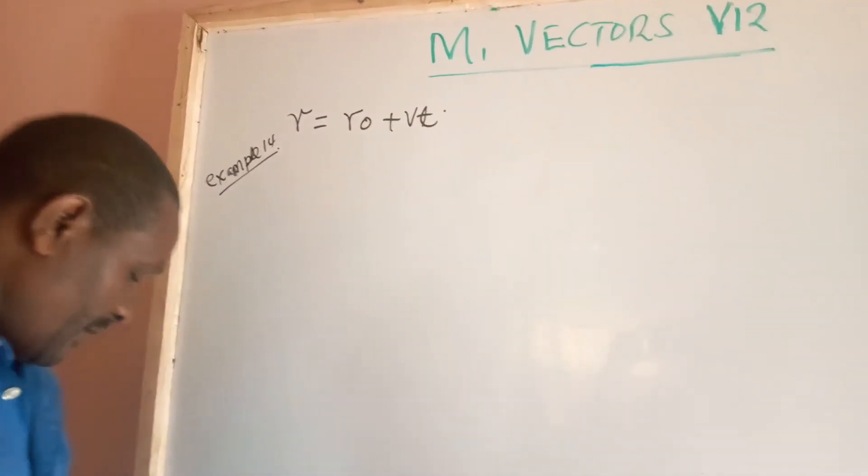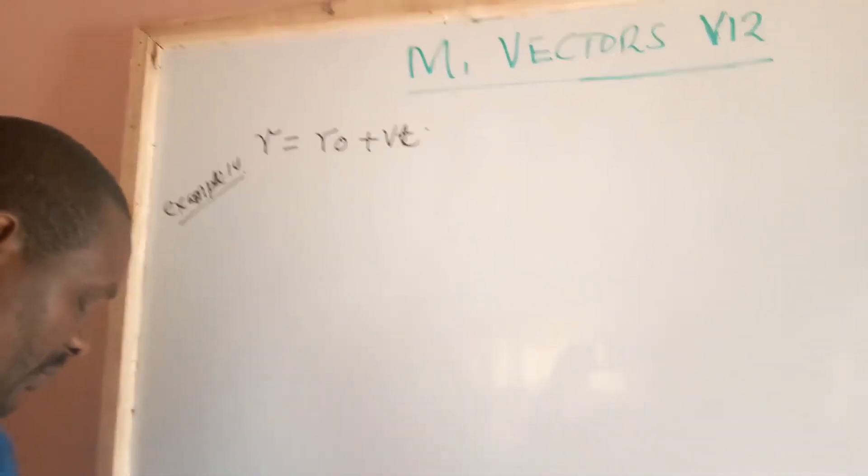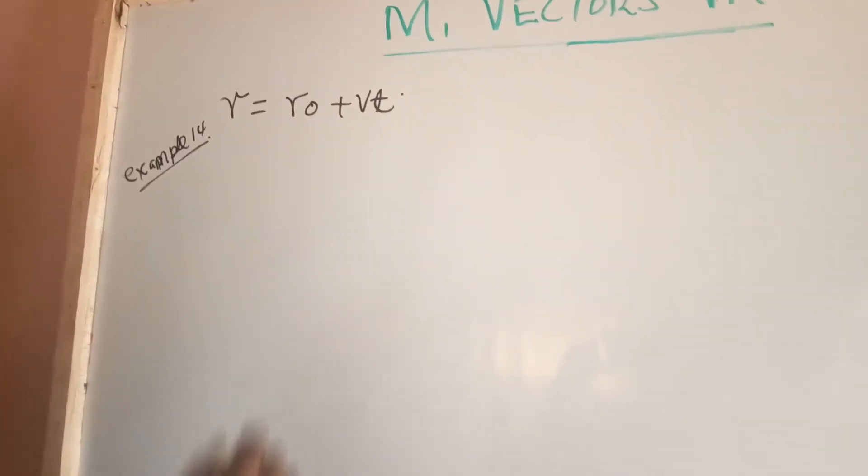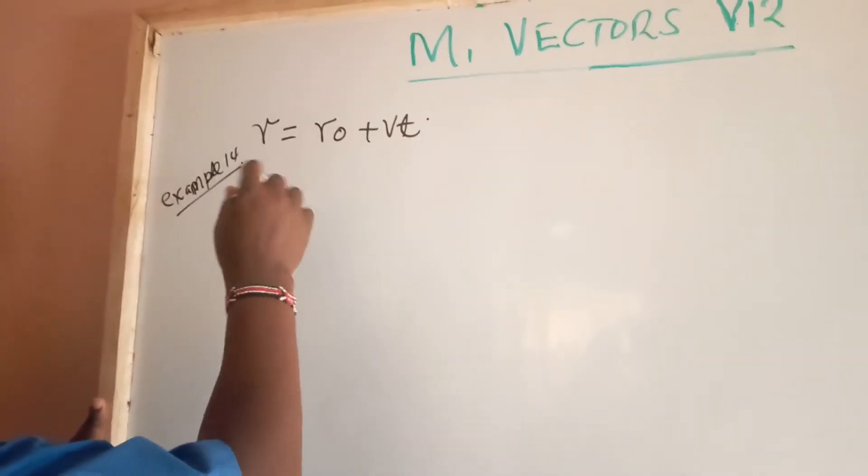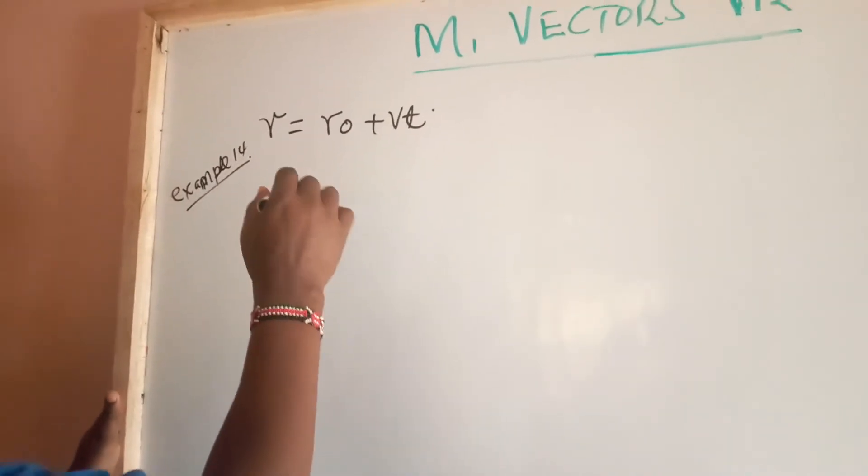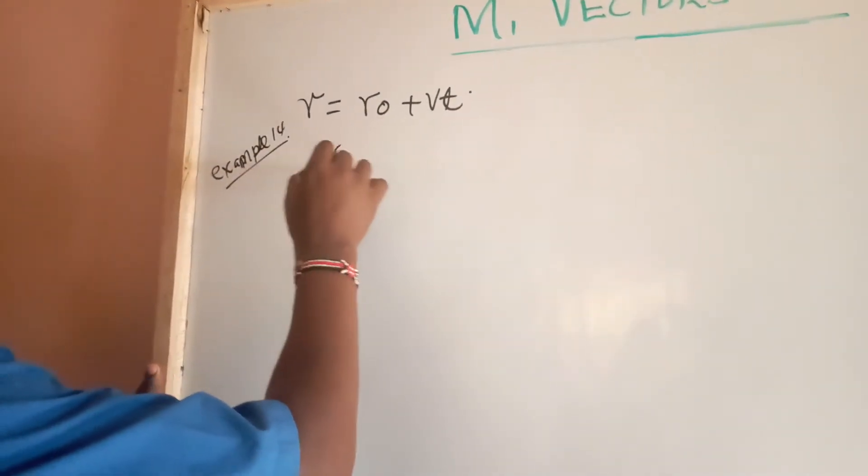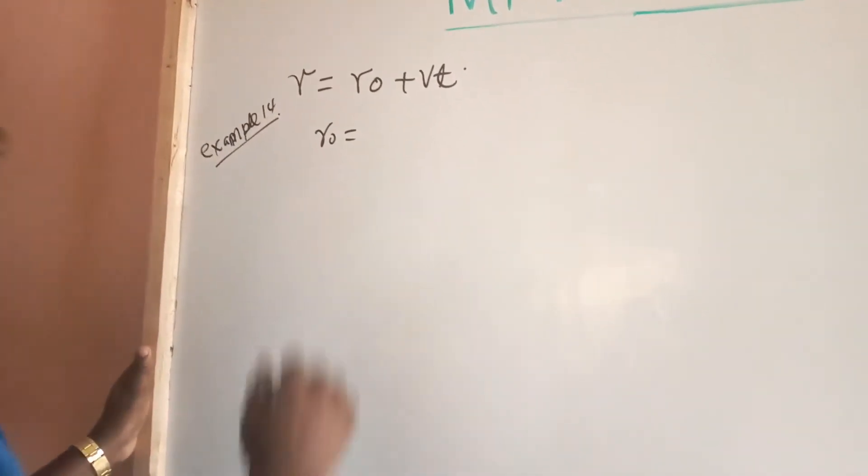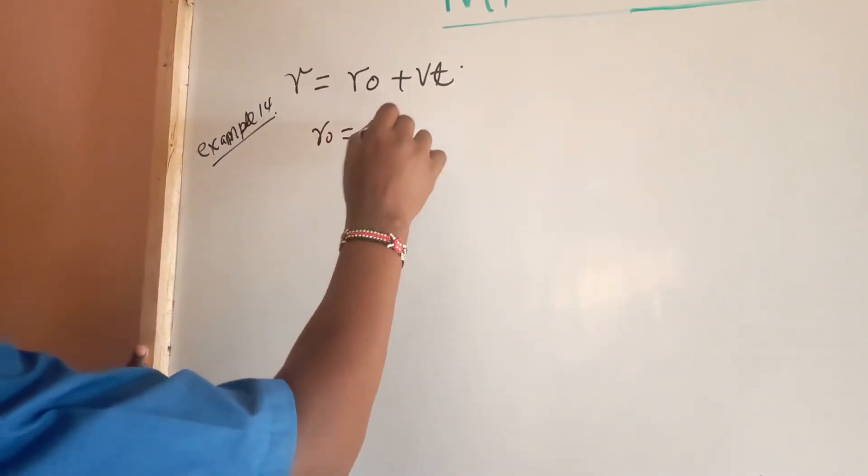In example 14, at time t equals 0, a particle has position vector. Of course, when time t equals 0, we have position vector which is r0, 4i plus 7j.